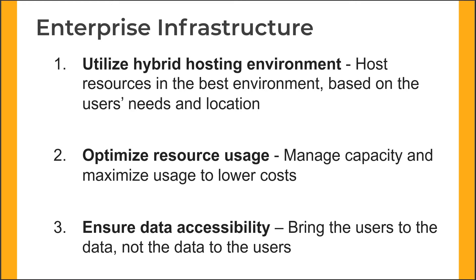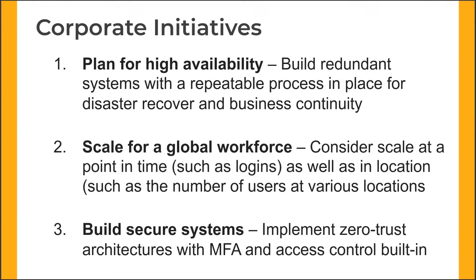Those are enterprise infrastructure things to consider. The next group are really your corporate initiatives — how does this fit into how you run your business? The first thing to think about there is planning for high availability. You need to make sure you have redundant systems, not just on the applications users need to get access to, but also on the systems they use to access those — your display protocols, your gateways, your connection brokers. You need to architect the solution in a way that makes it highly available. And then also scalable, whether that's because you have a global workforce or a remote workforce.